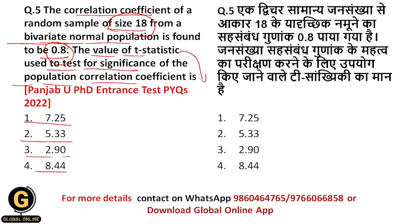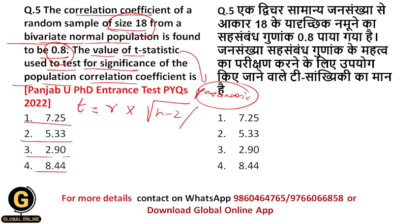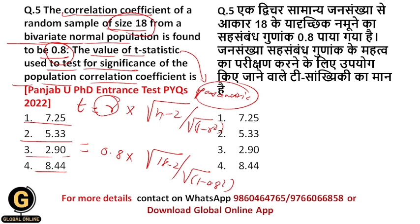The t-statistic is a parametric test through which you can test population significance. The formula is: t = r × √(n−2) / √(1−r²), where r is the correlation coefficient and n is the sample size. Putting in the values: r = 0.8, n = 18, so t = 0.8 × √(18−2) / √(1−0.8²). Solving this gives t = 5.33. So the correct answer is option 2, that is 5.33.